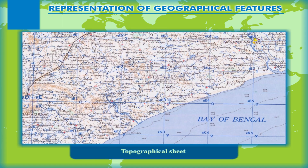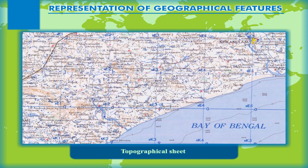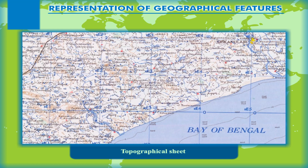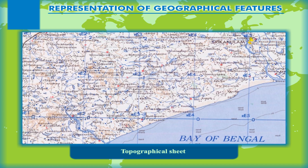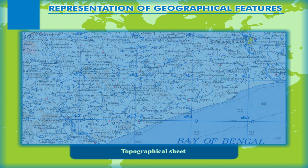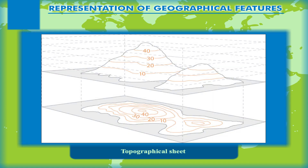Topographical sheet. A relief map shows the height of the land above the mean sea level on a flat surface. Several methods have been developed to depict the relief features on a map, such as contours, form lines, spot height, benchmarks, hachures, etc. These methods have their merits and demerits, but contouring is the standard method for representing the relief on a topographical sheet.